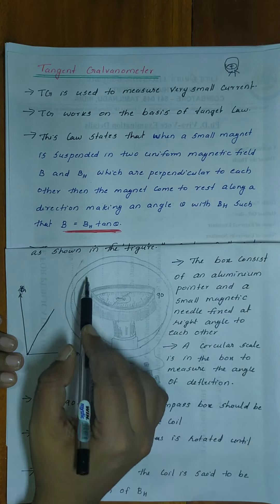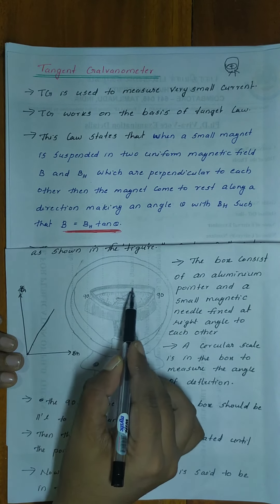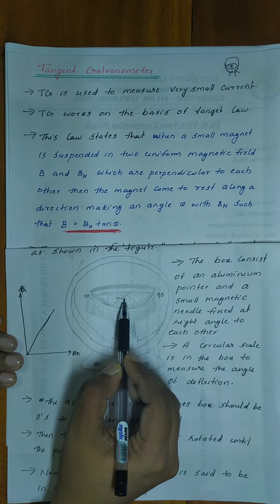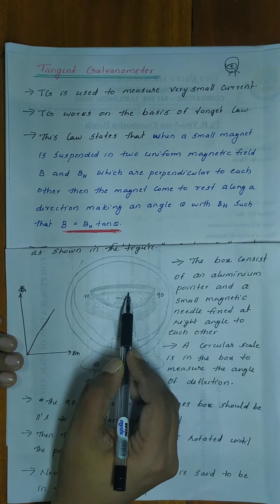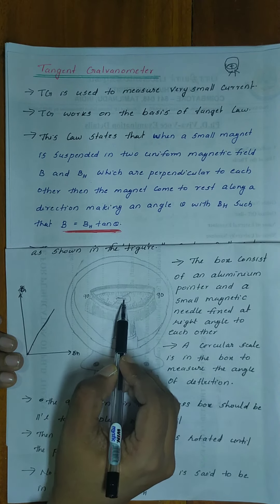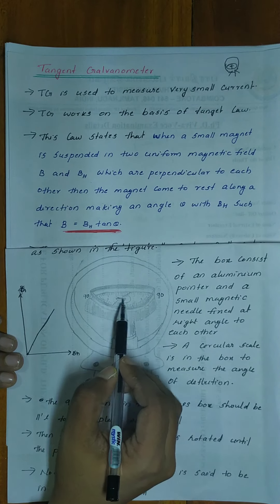Here is a circular coil. In the center is a compass box. In this compass box, there is a small magnet with an aluminum pointer. This small magnet is aligned in the earth's horizontal magnetic field.